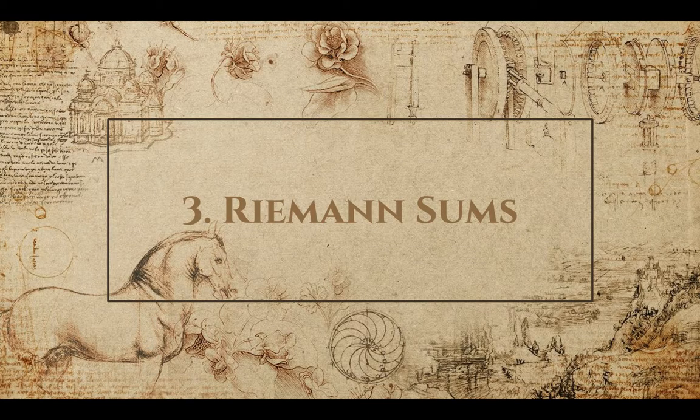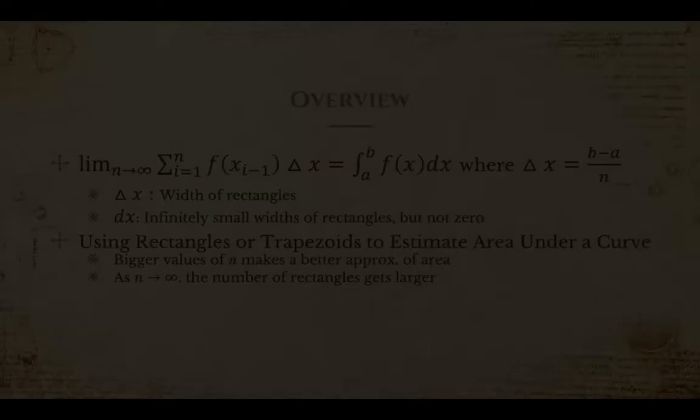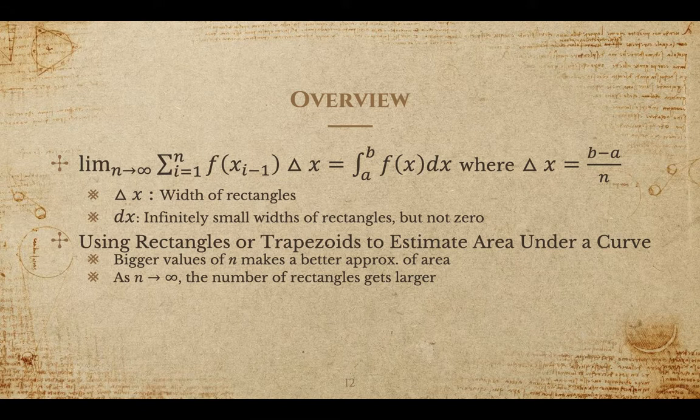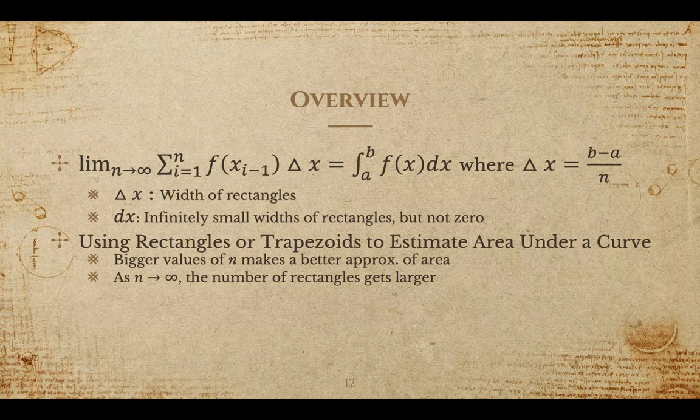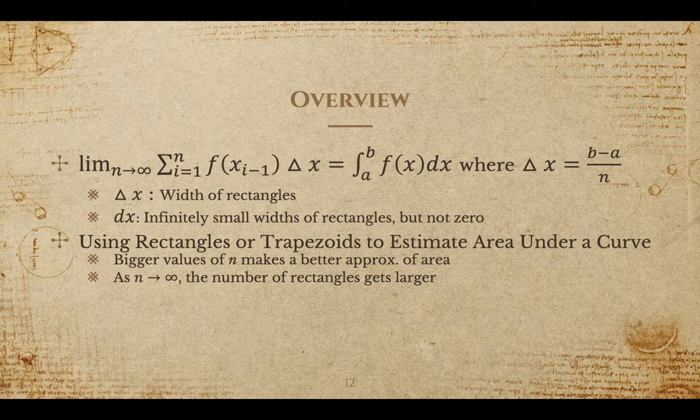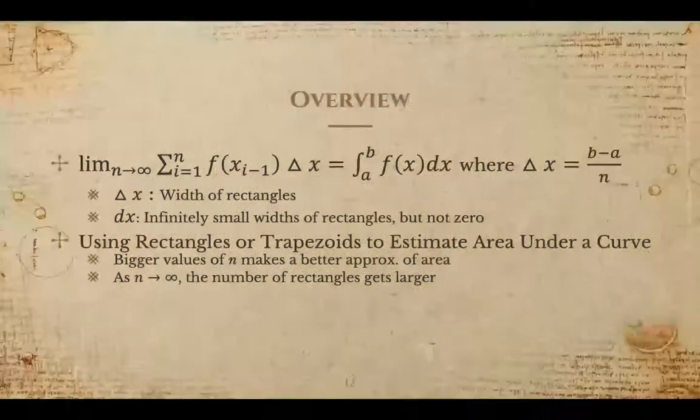Now that you know a little bit more about him as a mathematician, I'm going to walk you through Riemann sums. I know Riemann best for his work on these. So you can see the equation for Riemann sums on the screen. Riemann sums are the summation, or addition, of the area of rectangles created on curves to estimate the area under that curve. As n approaches infinity, that means the width of the rectangle is getting increasingly smaller. Using bigger values of n in the summation makes a better approximation of the area under the curve.